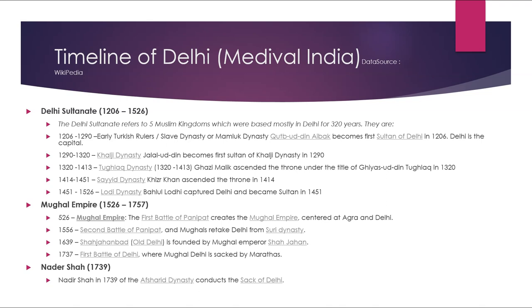The Delhi Sultanate refers to five Muslim kingdoms based mostly in Delhi for 320 years. The early Turkish rulers of the Slave/Mamluk dynasty (1206–1290): Qutb-ud-Din Aibak became the first Sultan of Delhi in 1206, with Delhi as the capital. The Khalji dynasty (1290–1320): Jalaluddin became the first Sultan, followed by Alauddin Khilji. The Tughlaq dynasty (1320–1413): Ghazi Malik ascended the throne under the title Ghiyasuddin Tughlaq in 1320. The Sayyid dynasty (1414–1451): Khizr Khan ascended the throne in 1414. The Lodi dynasty (1451–1526): Bahlul Lodi captured Delhi and became Sultan in 1451.